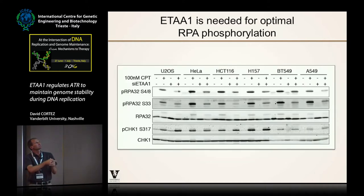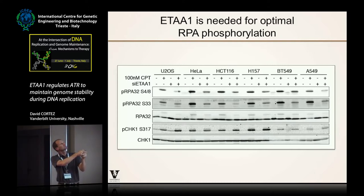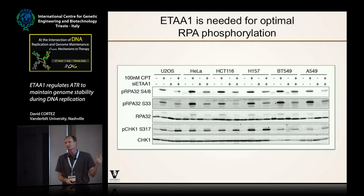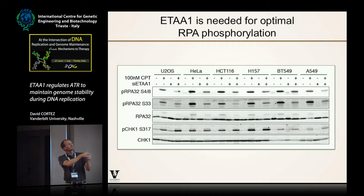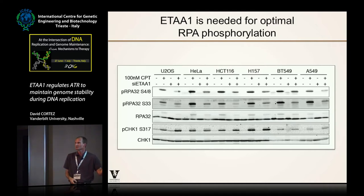We've done this many times in many cell types. When quantitated, RPA phosphorylation is always dramatically affected by the ETAA1 mutation that eliminates its ability to activate ATR, whereas CHK1 phosphorylation is generally less affected — and this is true across many cell types. In siRNA experiments in U2OS cells, HeLa cells, and HCT116 cells, every cell type shows decreased RPA phosphorylation when ETAA1 is knocked down. Both serine-4/8 and serine-33 phosphorylation — both ATR-dependent — are consistently reduced. We think ETAA1 is much more important for RPA phosphorylation than for CHK1 phosphorylation.